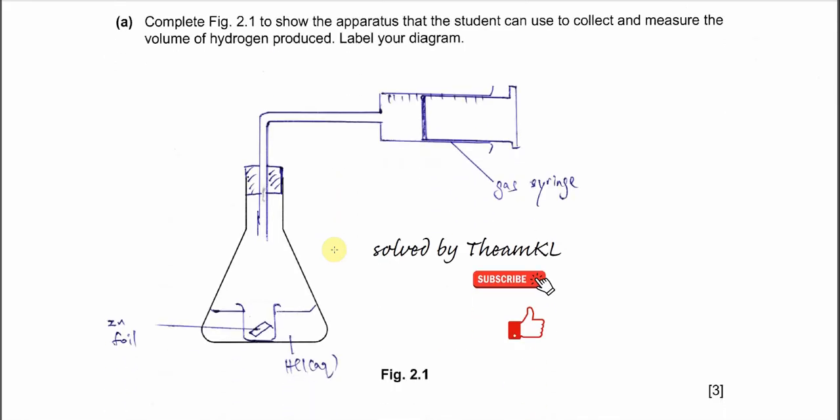For part A, complete figure 2.1 to show apparatus that the student can use to collect the hydrogen gas. First, you must draw the zinc foil inside a container. You can draw it in a small container or in a weighing boat, so the zinc foil is in the weighing boat. Make sure they don't really react first, so you can let these two react when you swirl this or mix it when you want to start the reaction. Another thing: you must make sure the apparatus is sealed - no leakage.